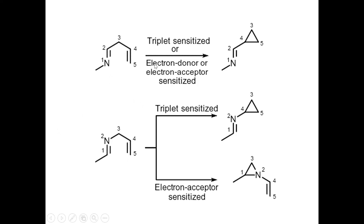For 1-aza-di-pi-methane 1,4-diene, in the presence of a triplet sensitizer or electron donor/acceptor sensitizer molecule, you get cyclopropyl amines after rearrangement. For 2-aza-di-pi-methane 1,4-diene with a triplet sensitizer, you get cyclopropyl amines and cyclopropyl imines — imine meaning there is a double bond at the nitrogen. If you use an electron-acceptor sensitized molecule with 2-aza 1,4-diene, you get a different product: N-vinyl aziridines — nitrogen containing a vinyl group.